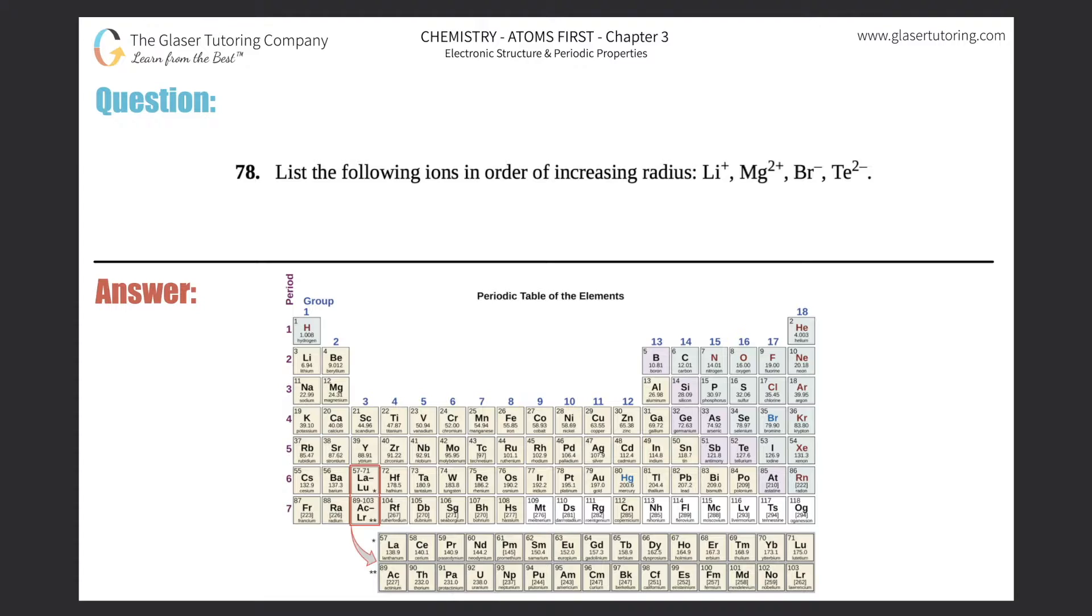Number 78: List the following ions in order of increasing radius. We have Li+, Mg2+, Br-, and Te2-. Alright, so we've done tons of problems now talking about atomic radius.